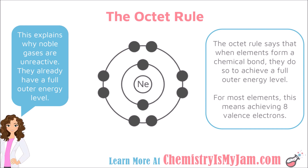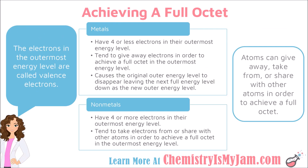All of the noble gases have full outer energy levels, which explains why they are unreactive. Other elements are going to react in such a way that they look like a noble gas in terms of their electrons — they are going to try to achieve a full outer energy level. Atoms can either give away, take from other atoms, or share electrons in order to achieve a full outer energy level.